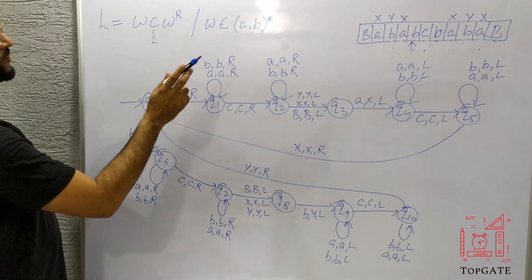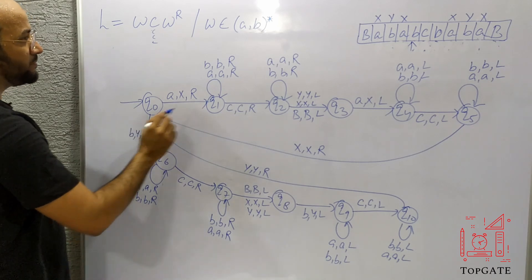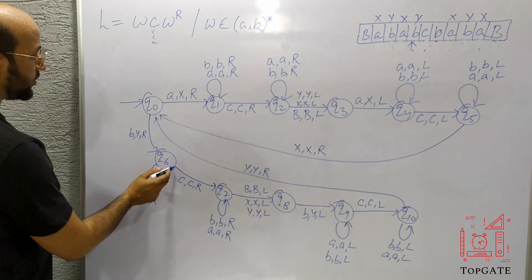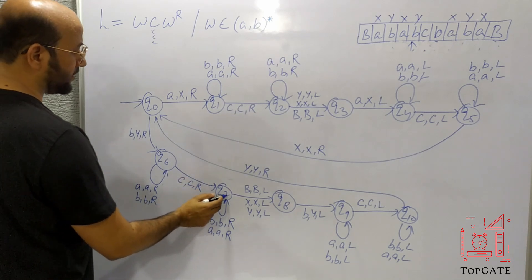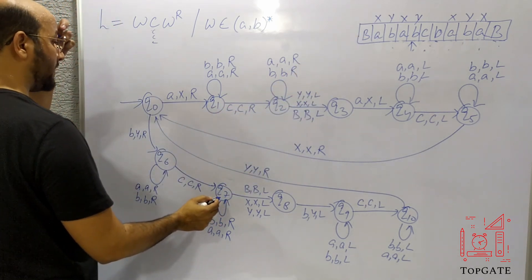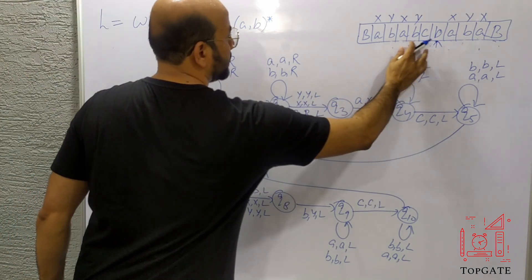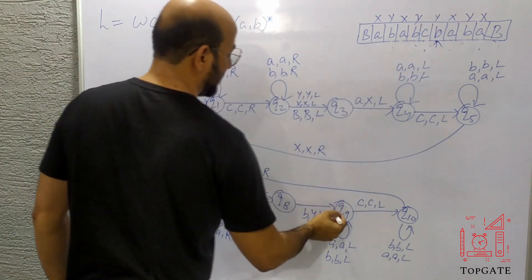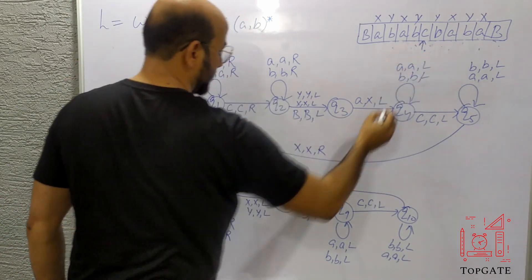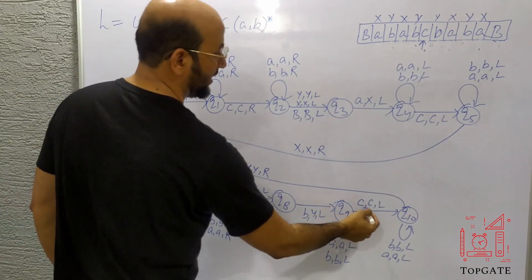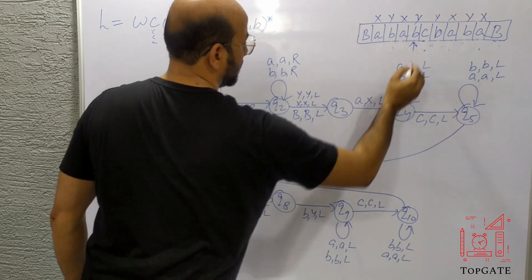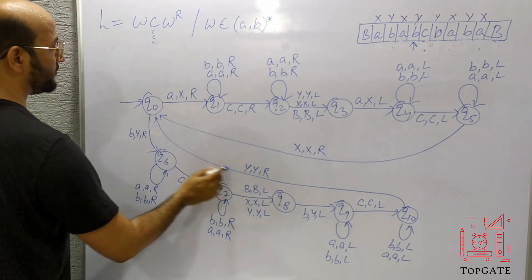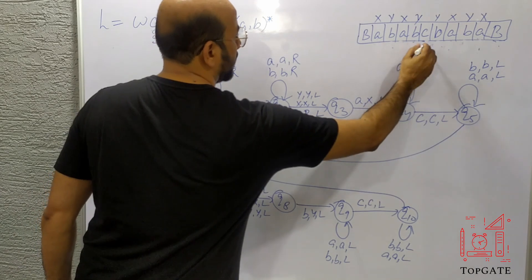At Q0, the machine finds B, changes it to Y, and goes right. Then it finds C — C is skipped. Then it finds X. At Q7, X is skipped and the pointer comes to the last B. At Q8, this B is changed to Y and a left turn is taken. The pointer now points to C and at Q9, if you find C let it be C go left. The machine goes to Y, and from Q10, if you find Y let it be Y go right, returning to Q0. The pointer now points to C.